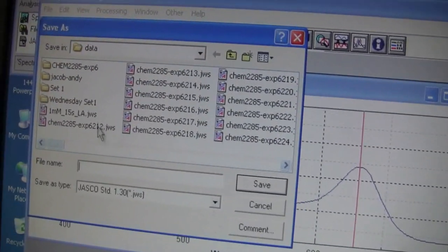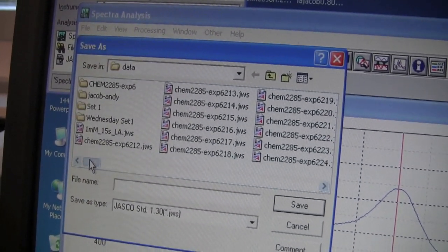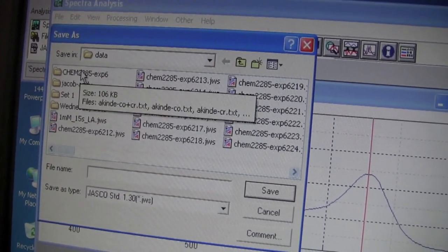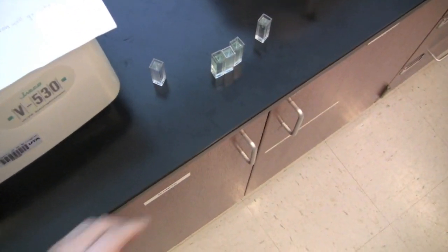Save this file using your initials and the solution concentration. Use a folder set up by your lab tech. Remove this cuvette and repeat using the same procedure for the rest of the cuvettes.